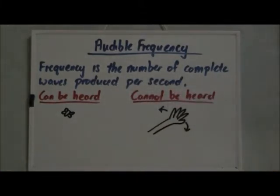As you all know, sound is caused by vibration. But why is it that sometimes certain vibrations we can hear, but certain vibrations we cannot hear?